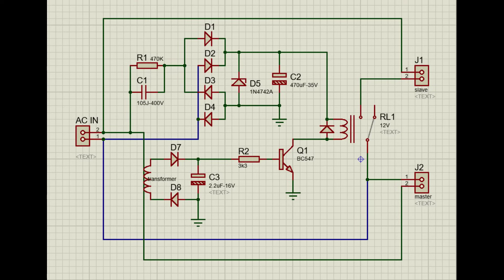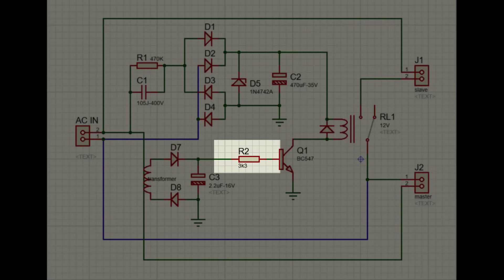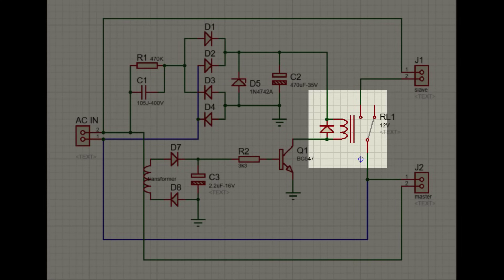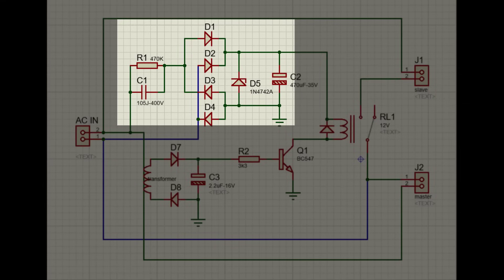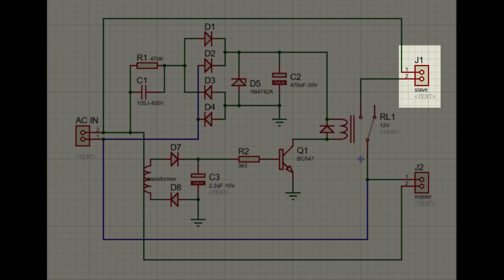When current is drawn, the voltage will rise in the current transformer. The diode converts AC to DC and passes through this resistance to the base of the transistor, so the relay works. This is a low current 12V power supply circuit to drive the relay. Therefore, the power source slave will only work with the work of the power source master.